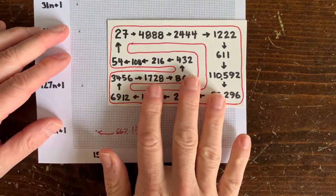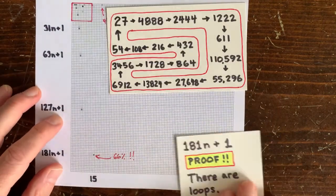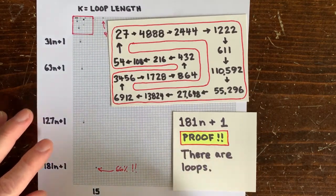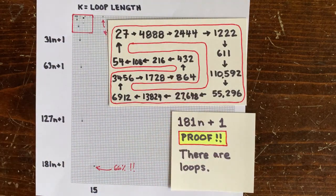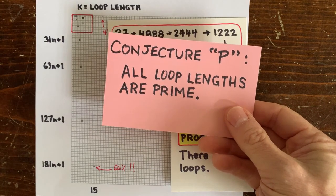So we have a good resolution to the 181n plus 1 problem. And we found a third interesting loop to add to the 5n plus 1 loops we already knew about. And looks like conjecture P was wrong, since this loop has length 15, and 15 is not prime.